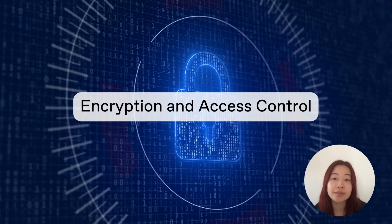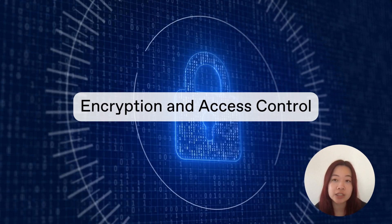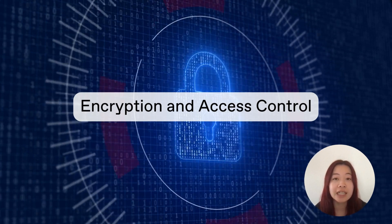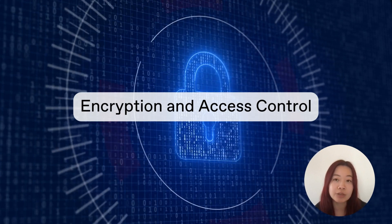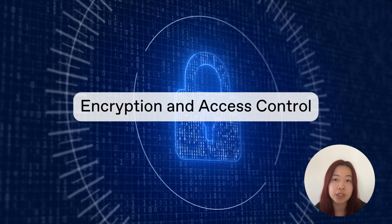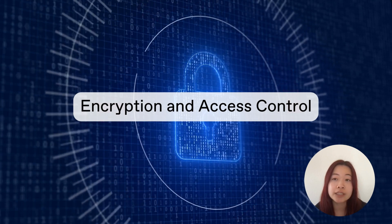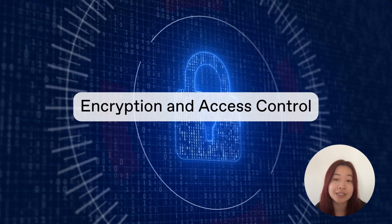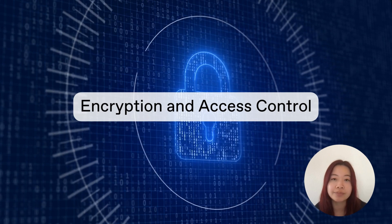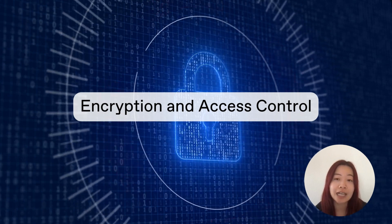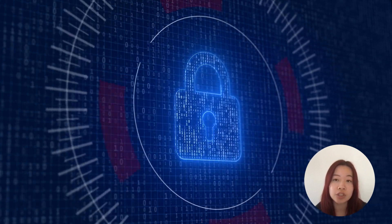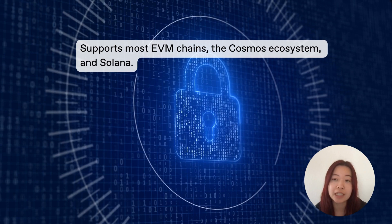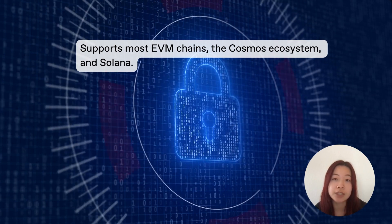Encryption is the process of encoding information to keep it hidden from unauthorized parties. LIT enables client-side encryption and decryption, allowing you to set on- or off-chain conditions without relying on a centralized key custodian. LIT's decentralized access control feature is interoperable with various chains like EVM, Solana, and Cosmos.